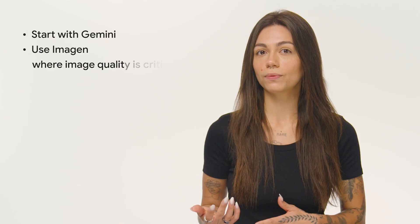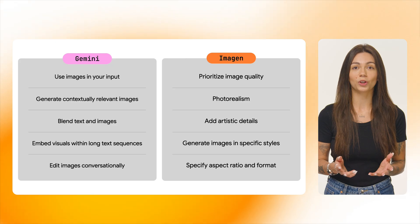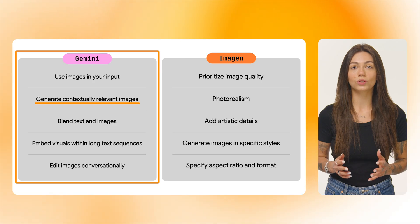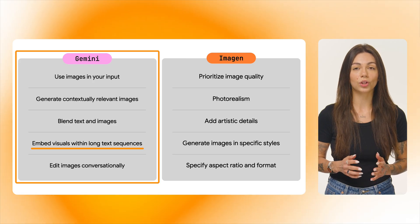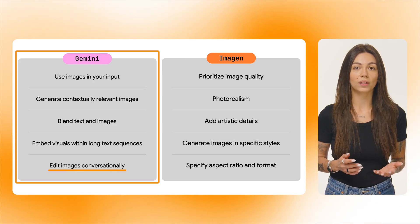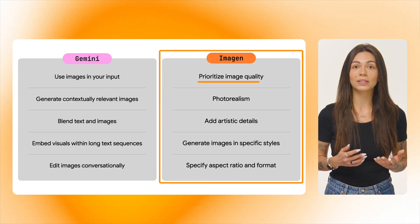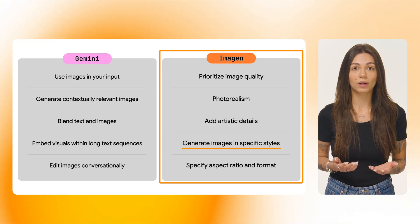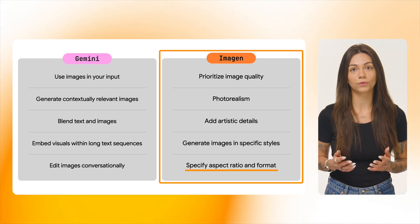I can help you with that. For most use cases, start with Gemini, and then choose Imagine for specialized tasks where image quality is critical. Here's a table to help you pick your model. Choose Gemini if you want to use images in your input, use raw knowledge and reasoning to generate contextually relevant images, blend text and images, embed accurate visuals within long text sequences, and edit images within a conversation while maintaining context. Choose Imagine if you want to prioritize image quality, photorealism, artistic detail, or specific styles — for example, impressionism or cartoon — and when you want to specify the aspect ratio or format of generated images.